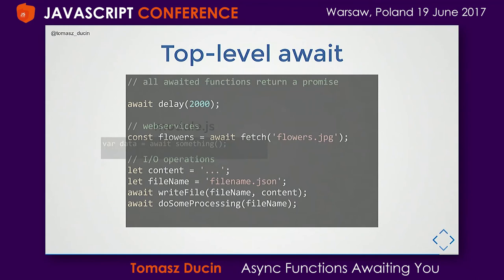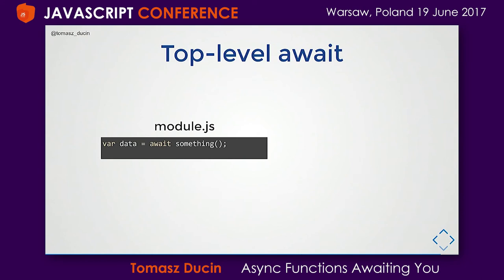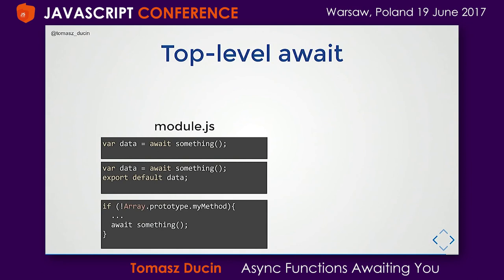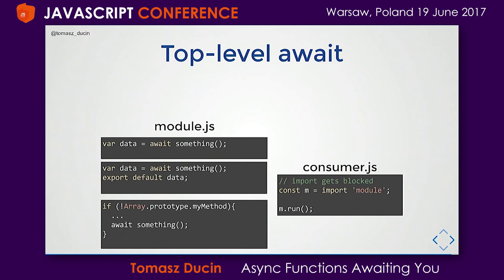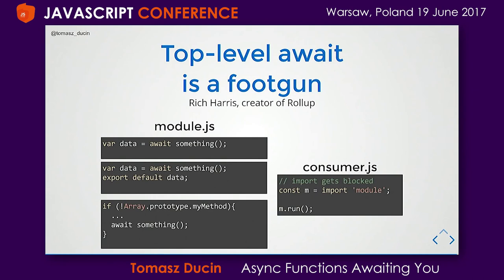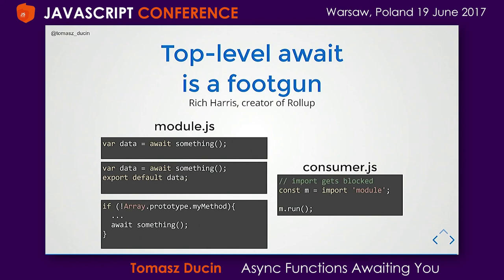The problem with top-level await is if this is a module consumed by another module. We could await and export, or even use it to polyfill an array prototype method, but when another module imports this, the import statement is synchronous. Not being aware of the internal top-level await, the consuming module will get stuck — it will get to that import and the await will make it wait. This is why top-level await is called a 'foot gun' by Rich Harris, creator of Rollup: very useful but also very dangerous. So it's a matter of discussion whether it will arrive in JavaScript. This is everything for this presentation — thank you very much.